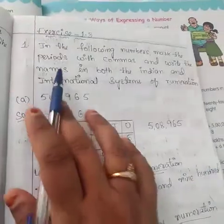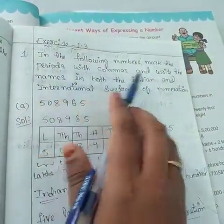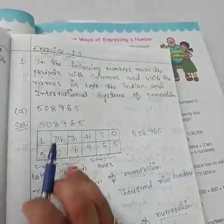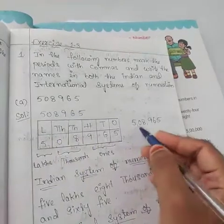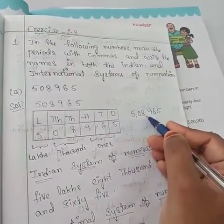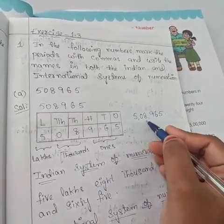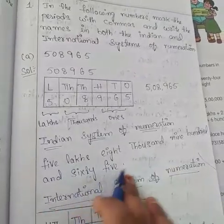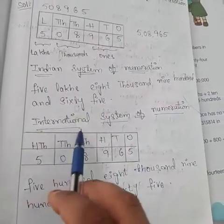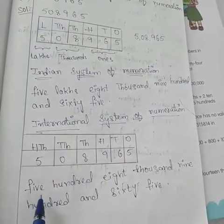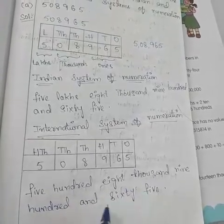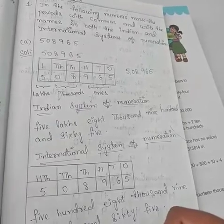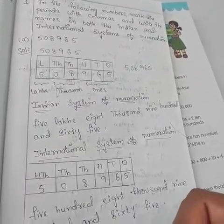What is the first question they have given here? In the following numbers, mark the periods with commas and write the names in both the Indian and international system of numeration. They have given the number 5,8,965. First, we have to separate with commas: after 5 we give a comma, after 8 we give a comma, then 965. So this is 5,8,965. We have written this in words for both the Indian and international system of numeration.